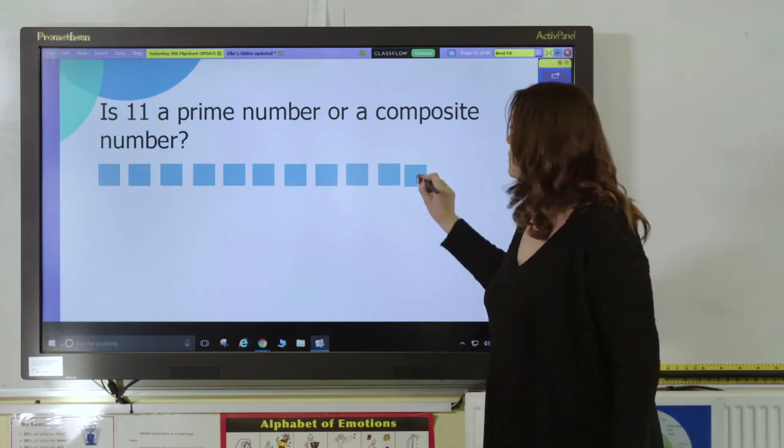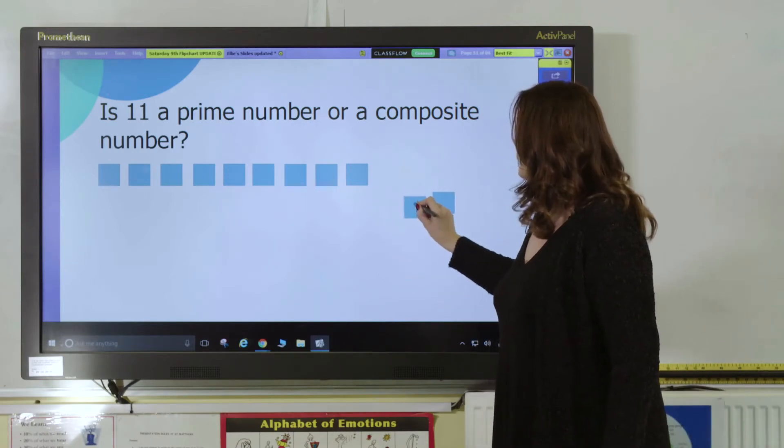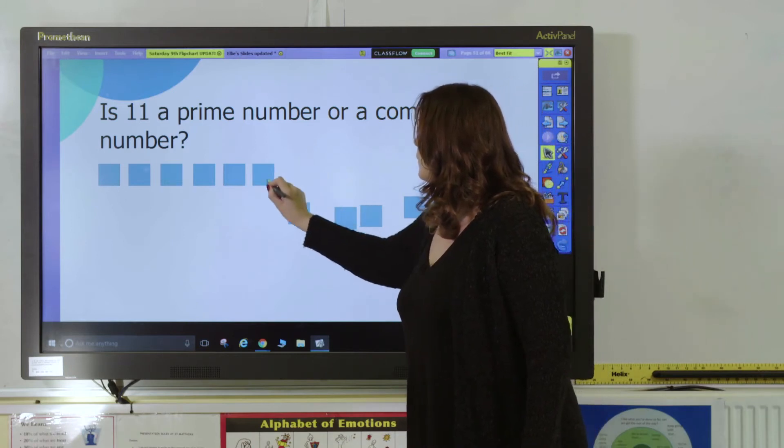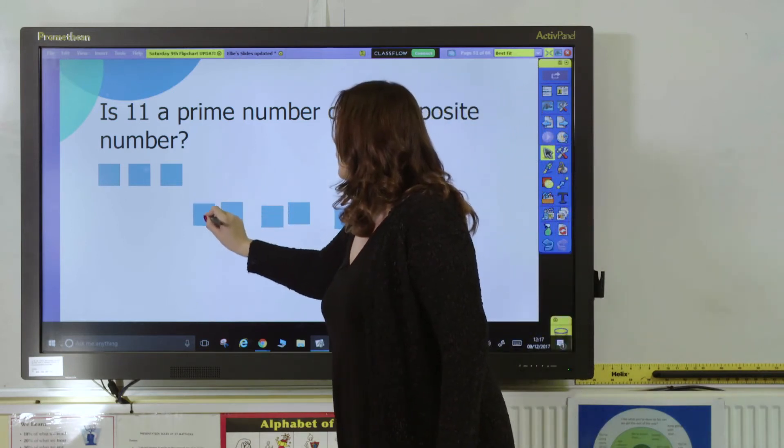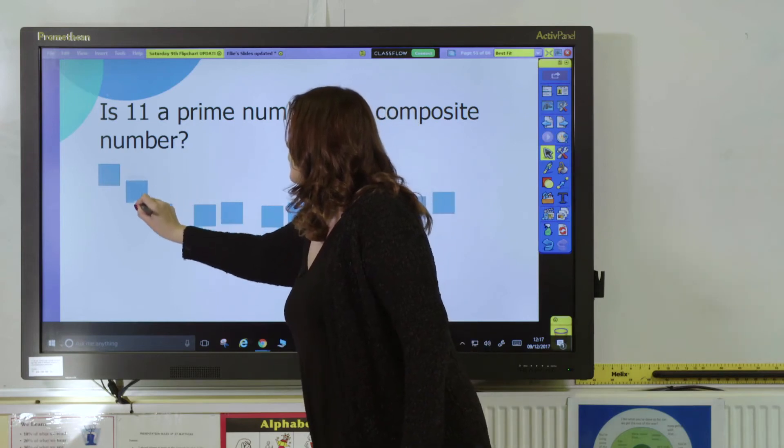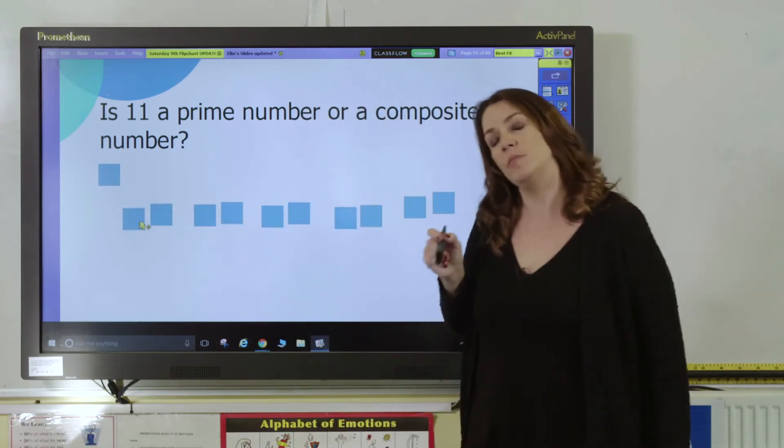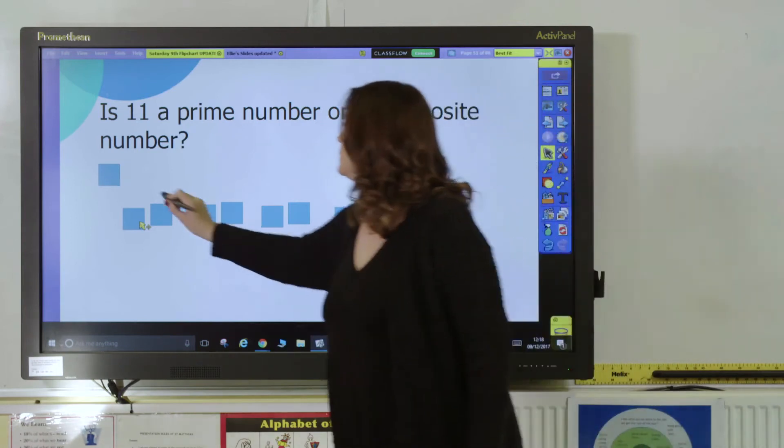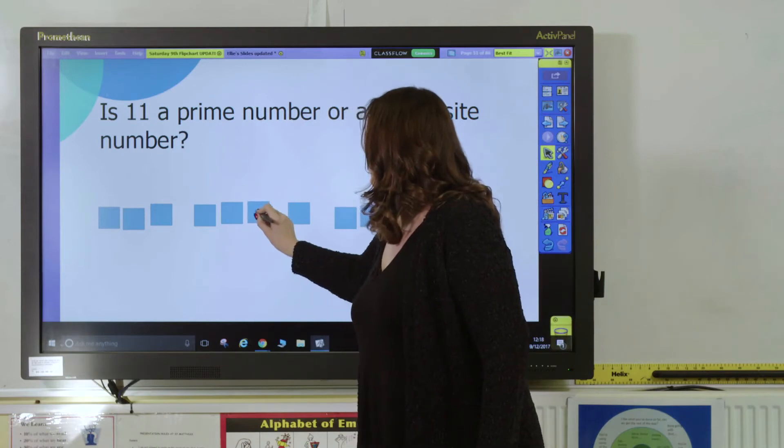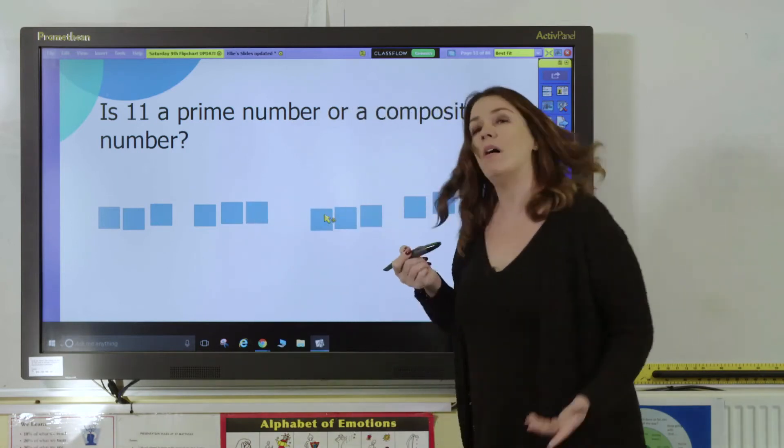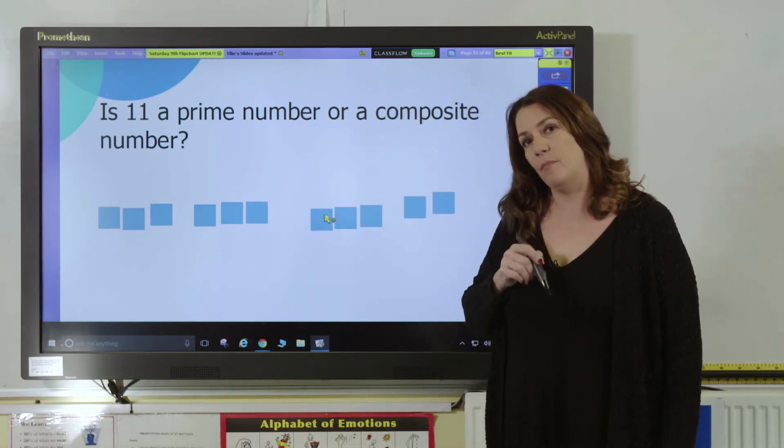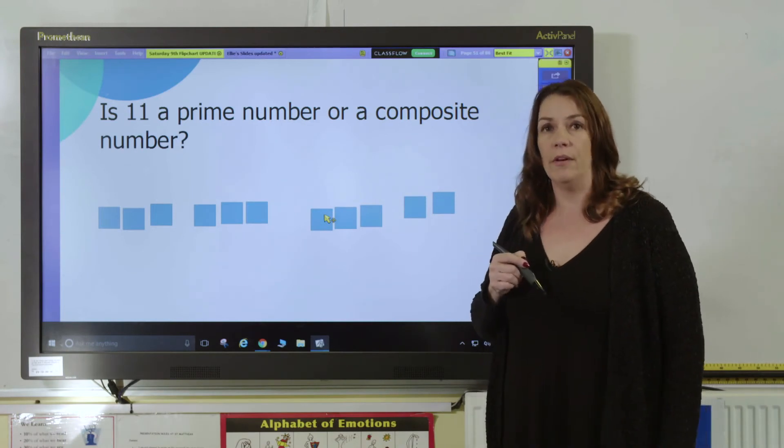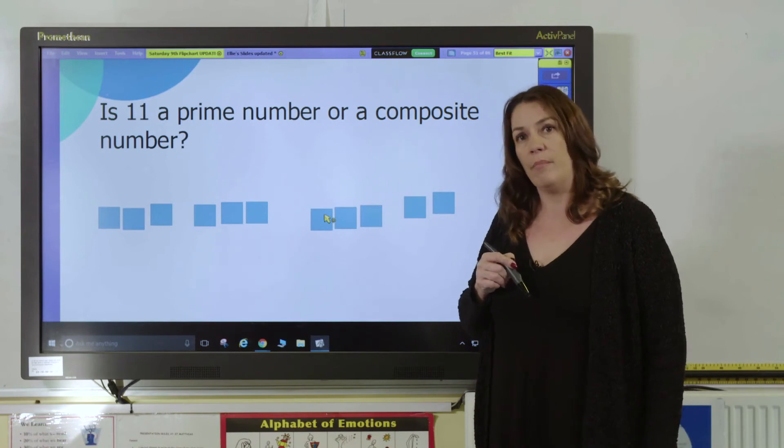Can we split them into 2s? We can't split them into equal groups of 2 because we have a remainder. What about 3s? We can't split them into 3s because they have a remainder. So from doing this, we can see that the only factors of 11 are 1 and 11, so it is a prime number.